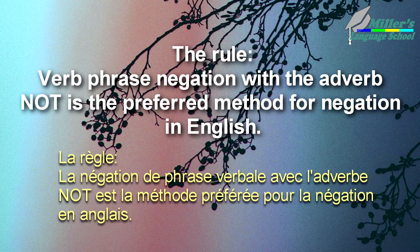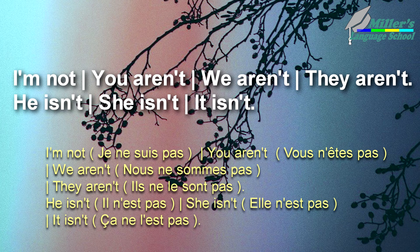The rule: Verb phrase negation with the adverb 'not' is the preferred method for negation in English. The negated forms are: I'm not, you aren't, we aren't, they aren't, he isn't, she isn't, it isn't.